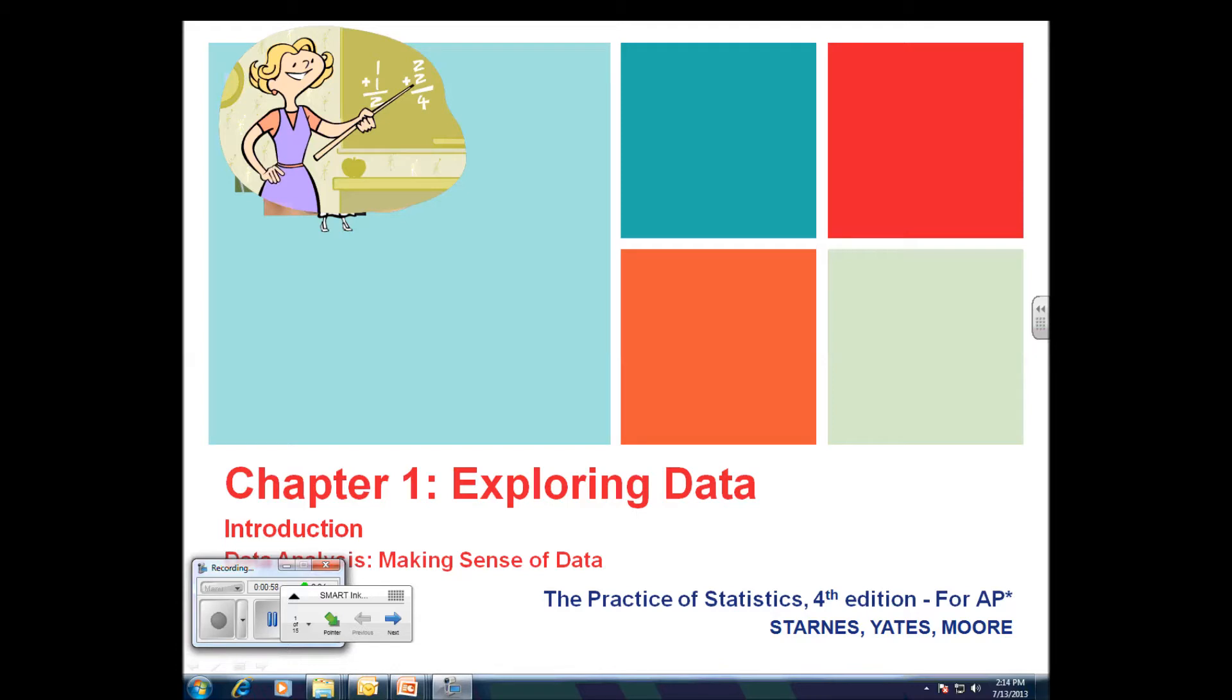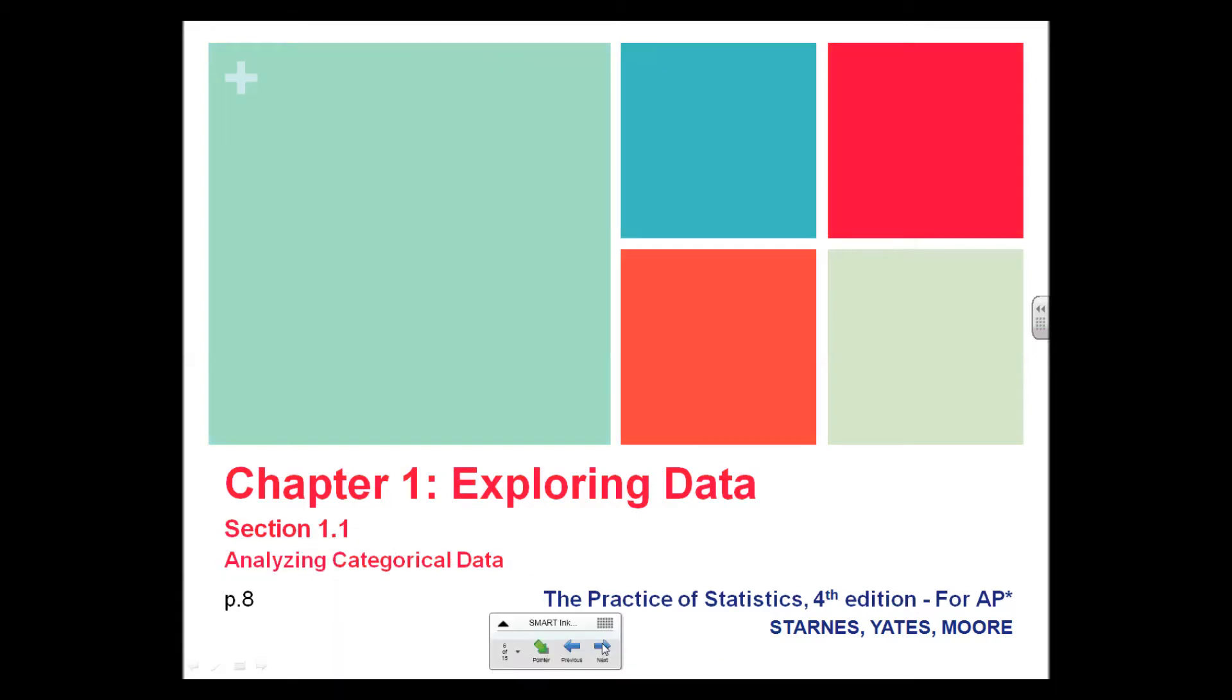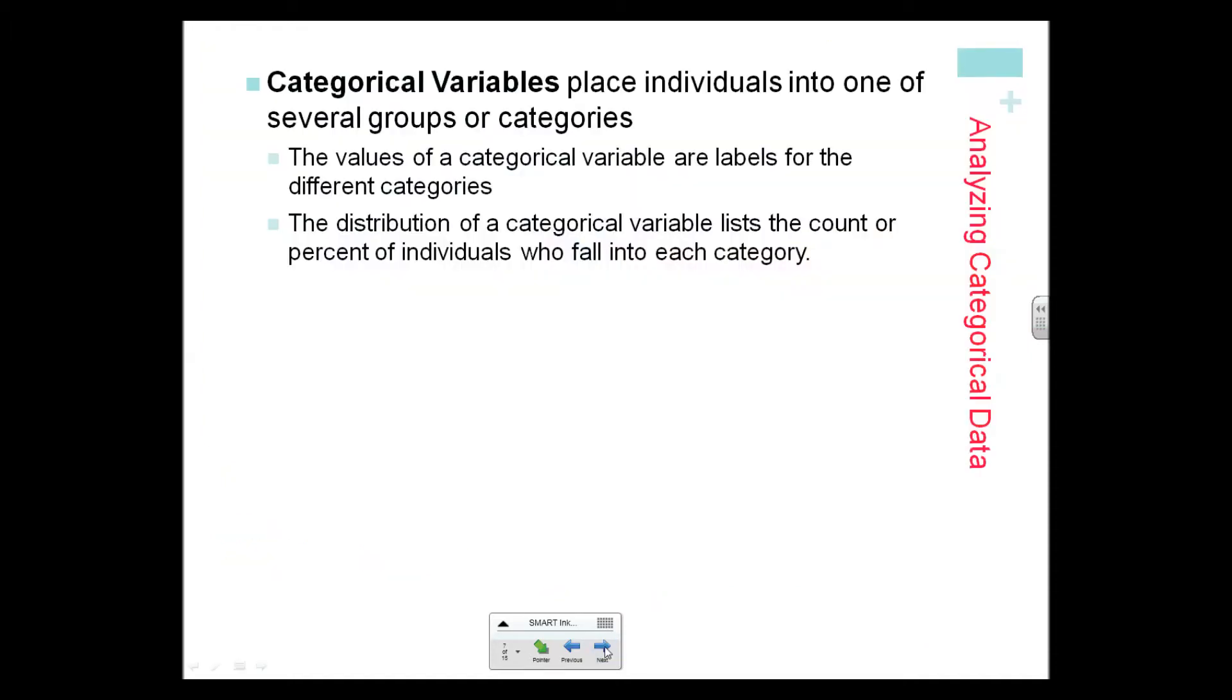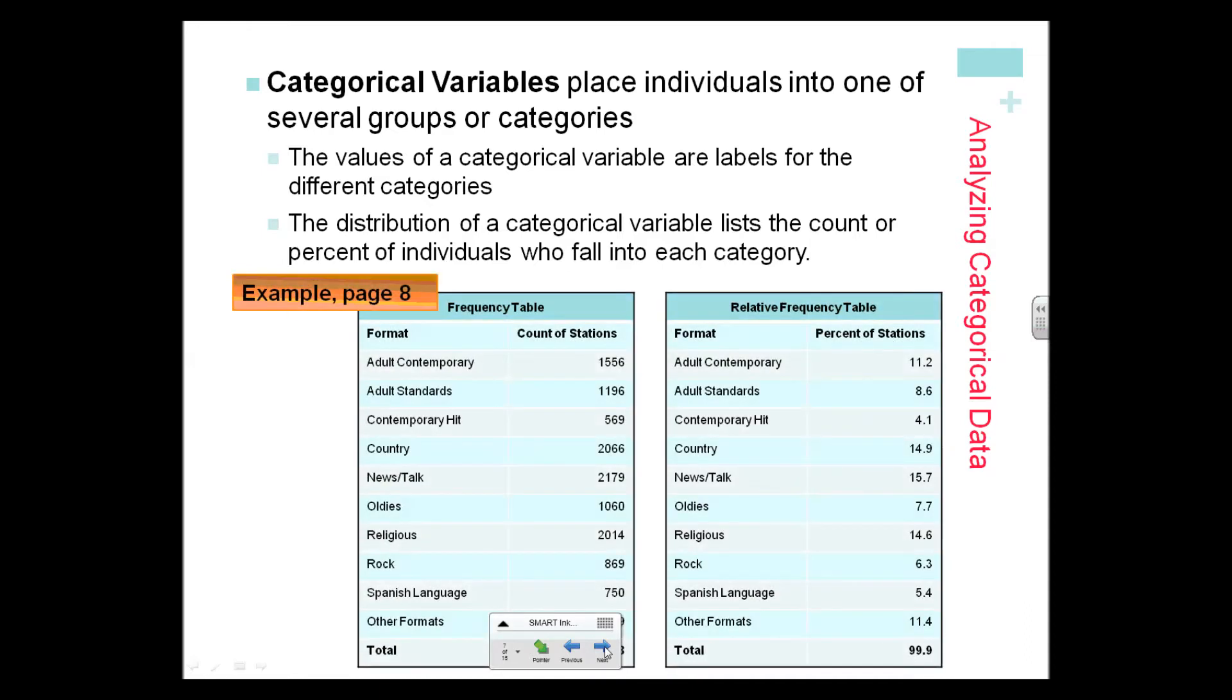Section 1.1 on page 8—we're looking at categorical variables. Almost all of this statistics course we will be working with quantitative data, so this is one of the few times we'll be working with categorical data, and there are a couple tricky things, so you really need to make sure you pay attention.